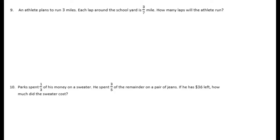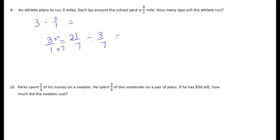Number 9: an athlete plans to run 3 miles; each lap around the schoolyard is 3/7 of a mile. How many laps will the athlete run? To solve, convert 3 into sevenths by multiplying by 7/7, giving 21/7 divided by 3/7. 21 divided by 3 equals 7 over 1, so the athlete will run 7 laps.